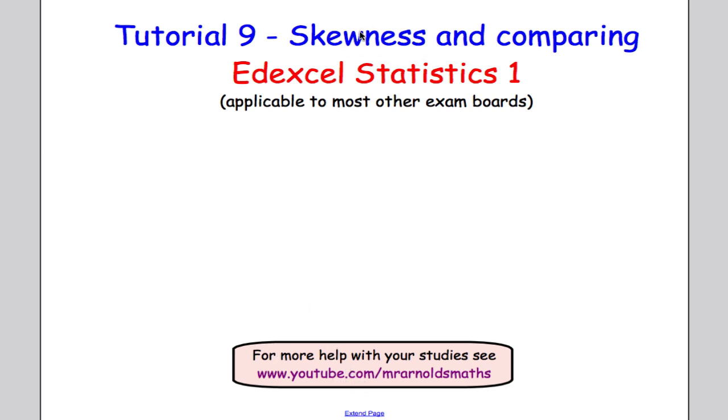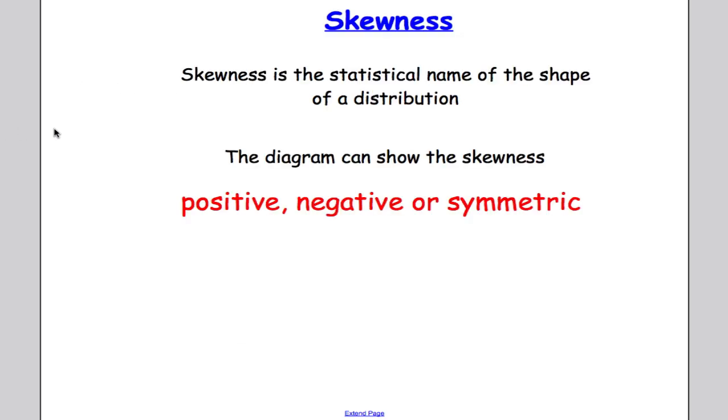We're going to talk about skewness today, which is basically the statistical name for the shape of a distribution. When we know about the skewness of a distribution, it tells us roughly what the distribution will look like. The diagram can show the skewness and it's either going to be positively skewed, negatively skewed, or symmetric.